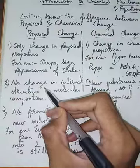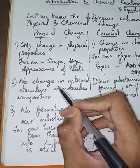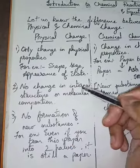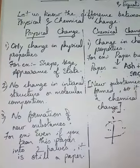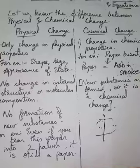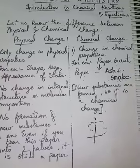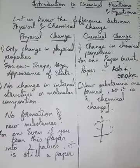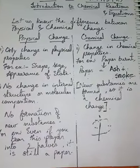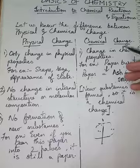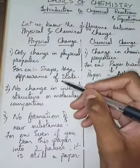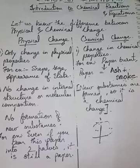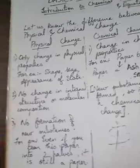In physical change there is no change in internal structure or molecular composition. A change in internal structure or molecular composition only occurs with a chemical change. In chemical change, the reaction involves shifting of bonds, making of bonds, and breaking of bonds. In physical change there is no reaction at all — those are the basic differences.